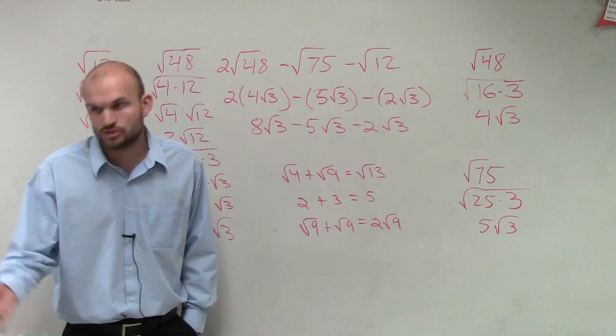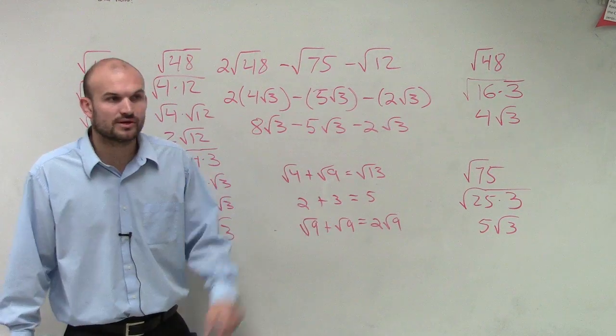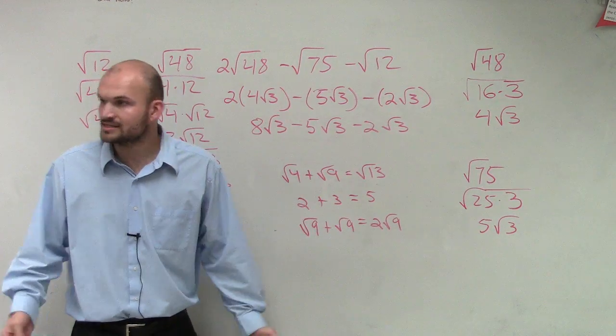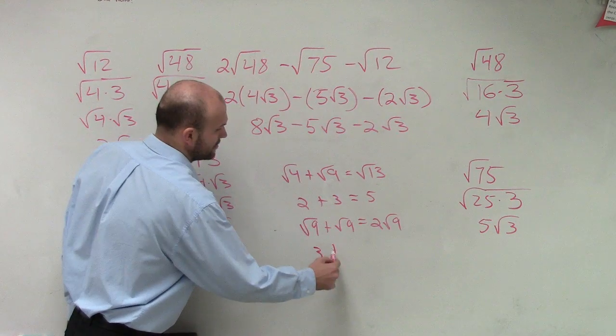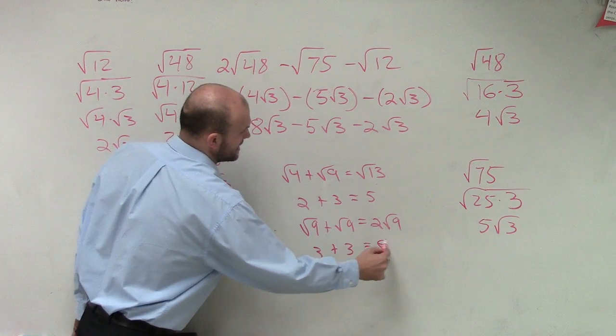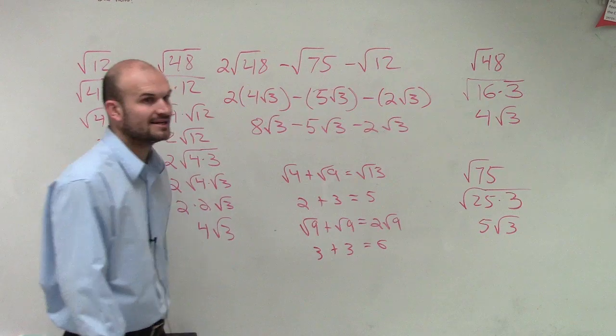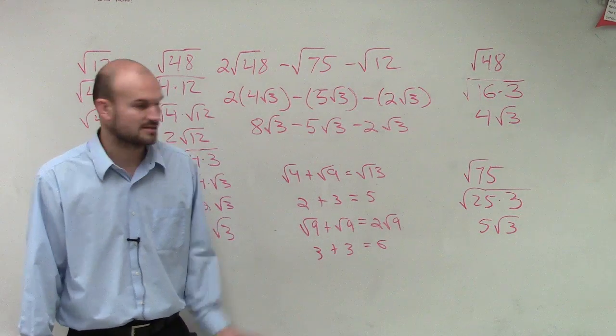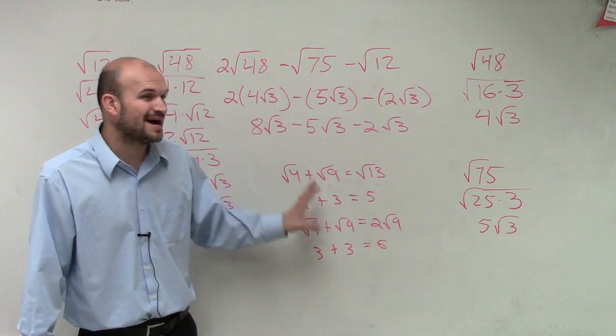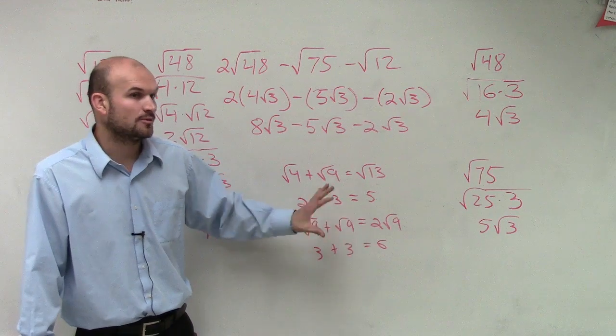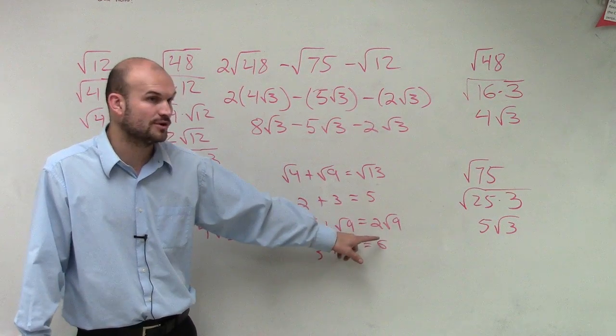What's x plus x? 2x. What's square root of 9 plus square root of 9? 2 square root of 9. Let's see if that works. 3 plus 3 equals 6. 2 times square root of 9, does that equal 6? Yes. So, remember, you can only combine them when they're like terms. And when they're like terms, you don't change what's under the root.